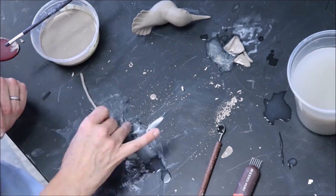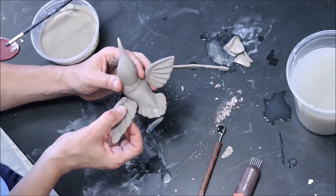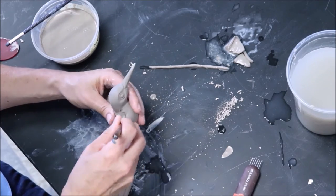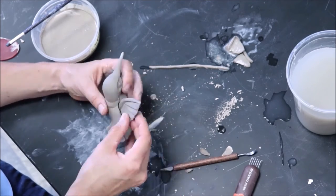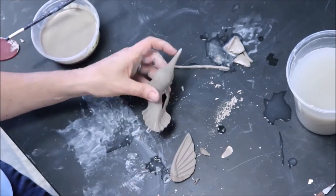Deflocculants deflock the particles, meaning it renders the clay particles magnetically the same. Have you ever tried to put two magnets together only to have them repel, and then when you flip them around they stuck together? That is because opposite charges attract to each other, while the same charge repels.